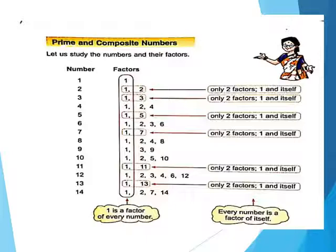The circled numbers — shown as 2, 3, 5, 7, 11 and 13 — have factors of only 1 and the number itself, meaning only 2 factors. Therefore these types of numbers are called prime numbers. Note that 1 is neither prime nor composite, and 1 is the factor of every number. A prime number is a number which has only 2 factors: 1 and the number itself.